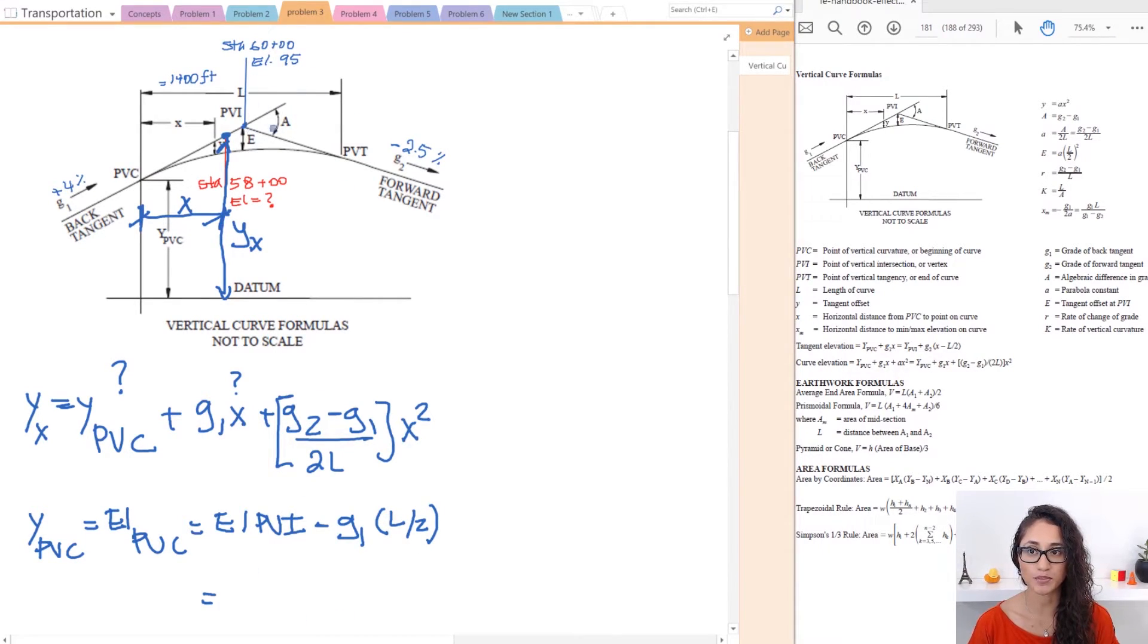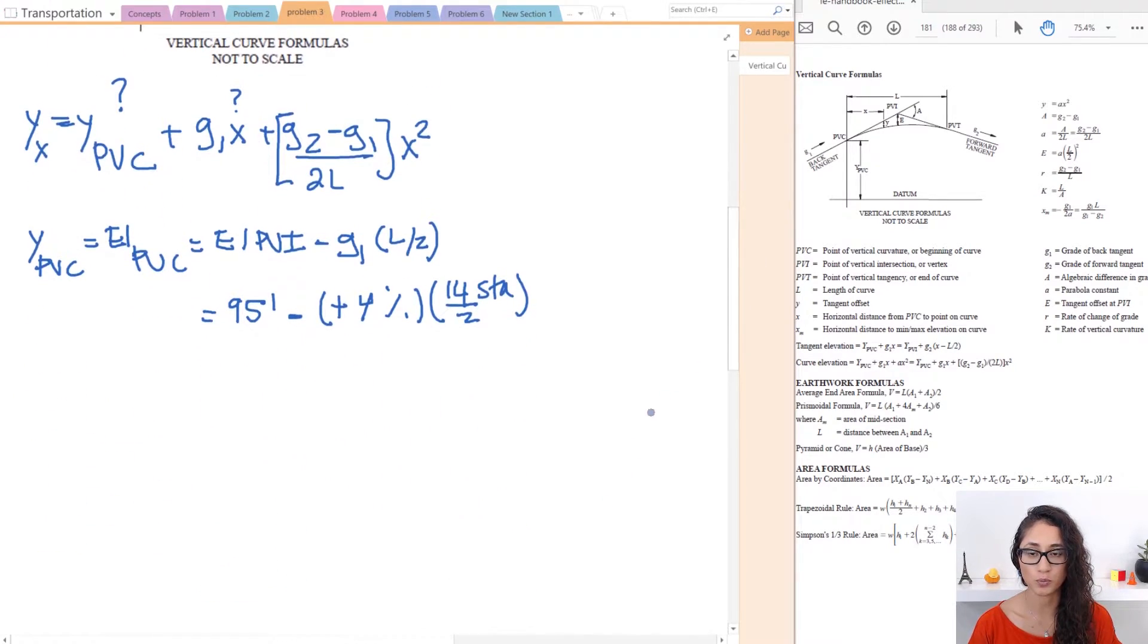So the elevation at PVI is given as 95 feet minus G1 which is 4% so this is positive. Make sure you keep it positive. If it's negative you have to write a negative and you multiply by L which is 14. This is station and you divide it by 2. So note here guys I want to also point something important here. If you're using percentage you have to use this in station. If you divide this by 100% then the length you can use it in feet.